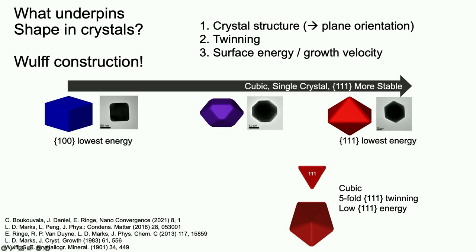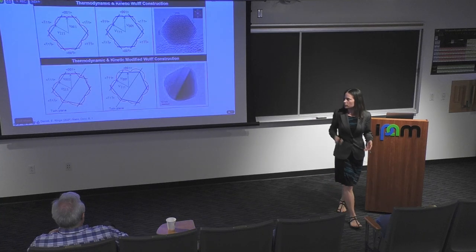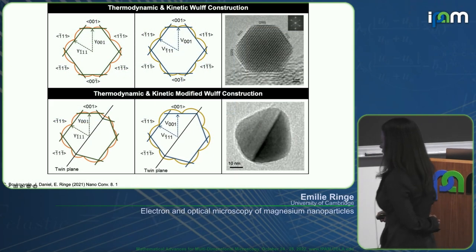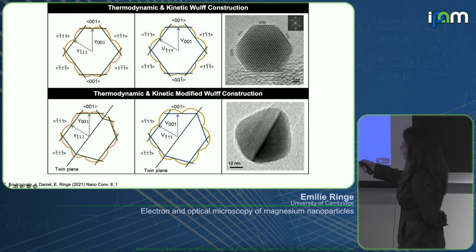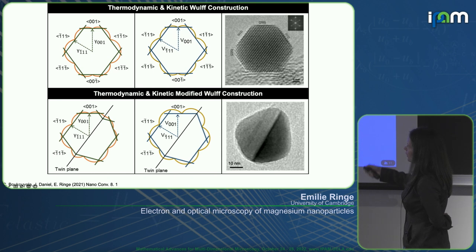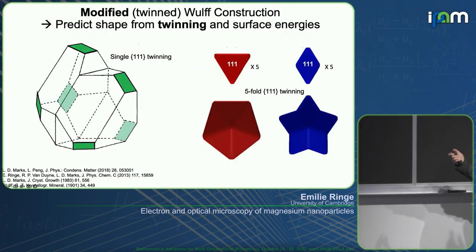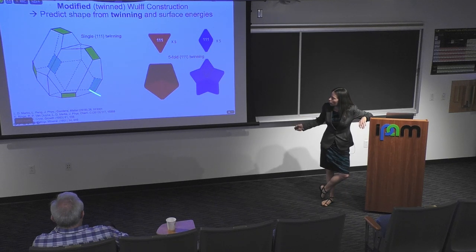In FCC structures, if the {100} facet has low energy you get a cube; if the {111} facet has low energy you get an octahedron. In a 2D projection model, the surface energy or growth velocity determines how much each facet is expressed — the longer the vector, the less the facet is expressed. You can build a model by putting in a twin plane, reflecting along it, and doing the same thing. In the FCC system you get either singly twinned structures or five-fold twinned structures.